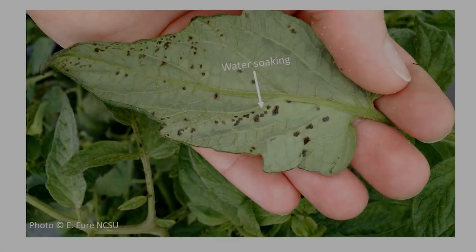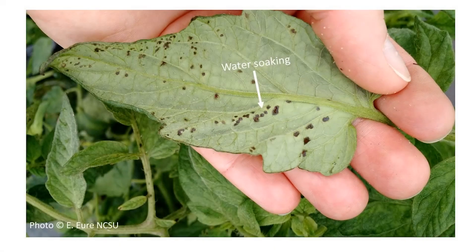To differentiate this disease from other tomato diseases, look on the underside of the leaf during wet conditions, such as in the morning or after a rain. Water-soaked areas will be visible if you have bacterial spot — water-soaking is a symptom that may look wet or greasy, and other diseases of tomato don't have this symptom. Also, bacterial spot will have purplish to brown margins on the leaf.